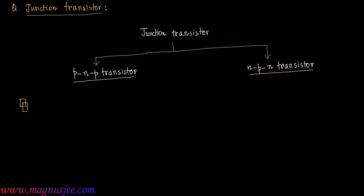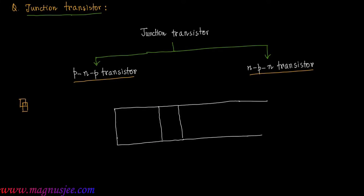If we draw an NPN transistor, a thin layer of P-type semiconductor is grown in between two relatively thick layers of N-type semiconductor. This junction transistor has three terminals.